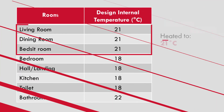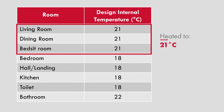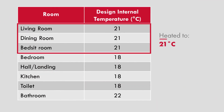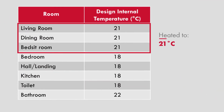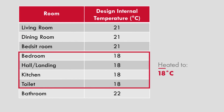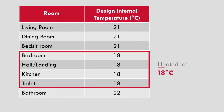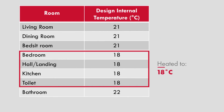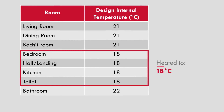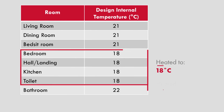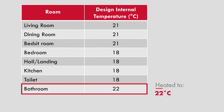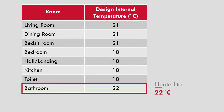Living rooms, dining rooms, and bedsits are heated to 21 degrees. Bedrooms, halls and landings, kitchens and toilets are heated to 18 degrees. Bathrooms are heated to 22 degrees.